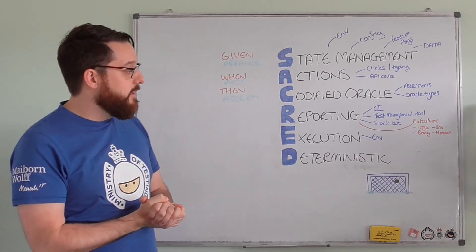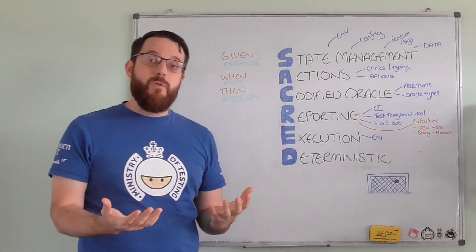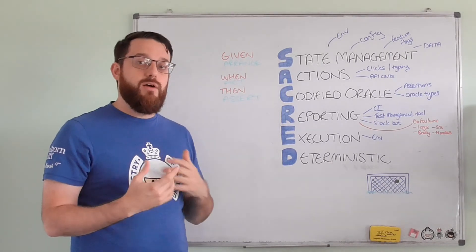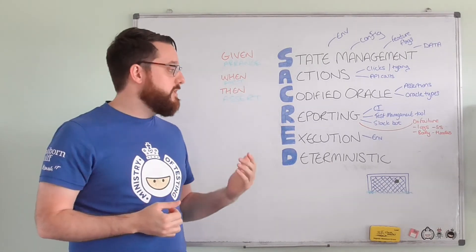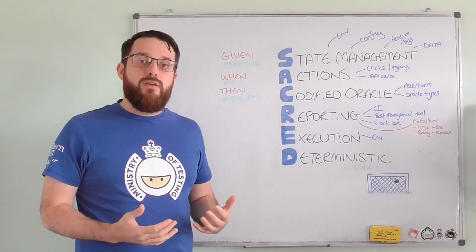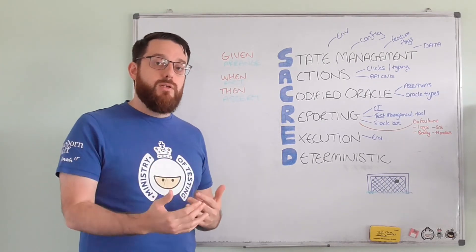And then finally the D: Deterministic. It's the goal. Lots of talk out there about flaky automation, but as I spoke at Selenium conference a few years ago, they're not flaky. You designed them to be that way. They're doing exactly what you told them.